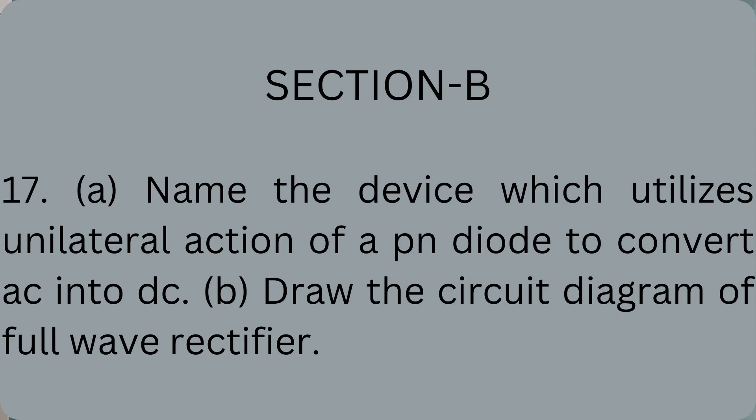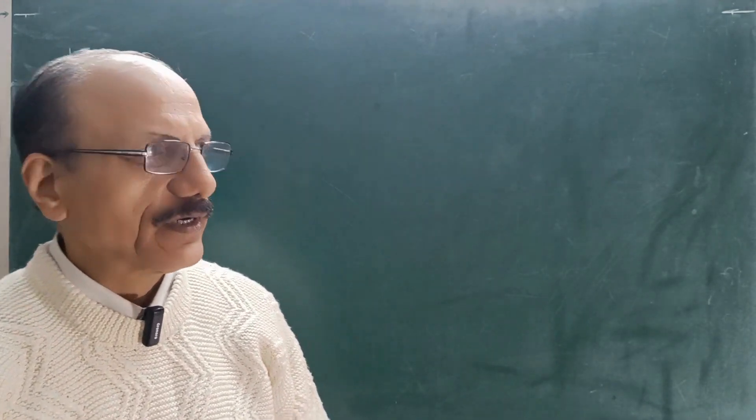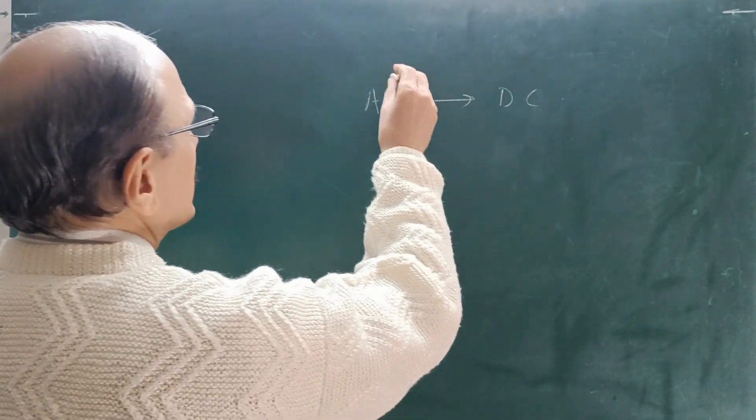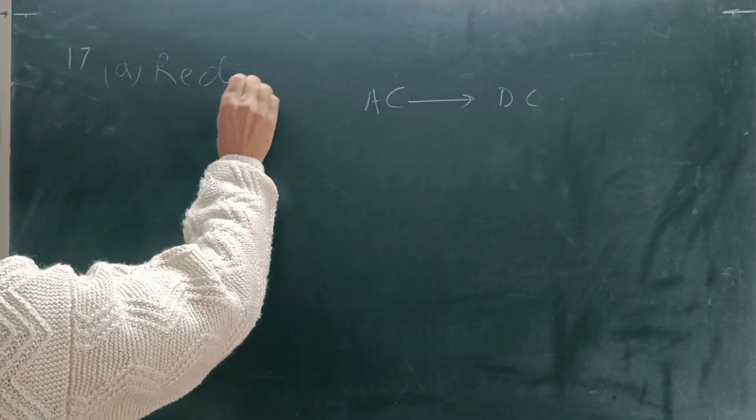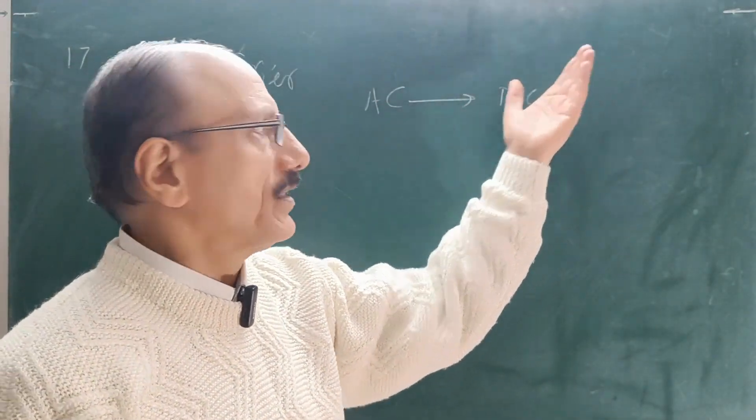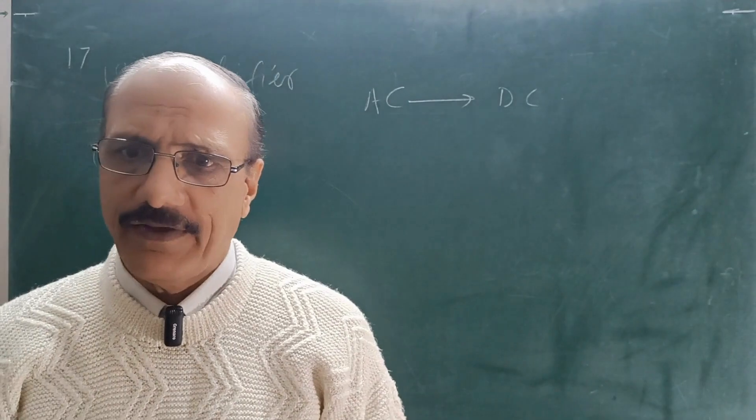Name the device which utilizes unilateral action of a PN diode to convert AC into DC. Part B, draw the circuit diagram of full wave rectifier. The device which converts AC into DC is rectifier. So A is rectifier, that is already given in the second part itself. And the process is known as rectification. This is not asked, but it is just for clarification.